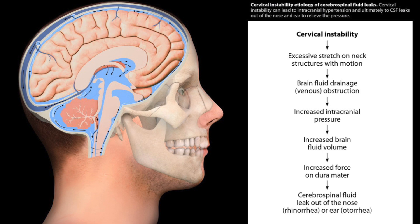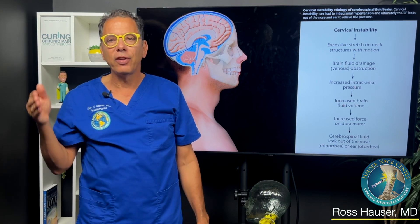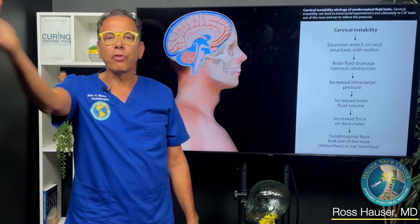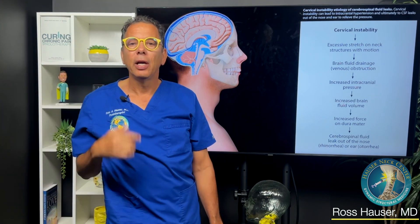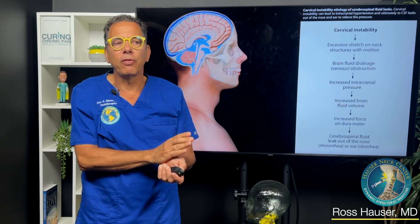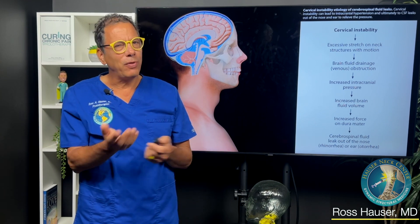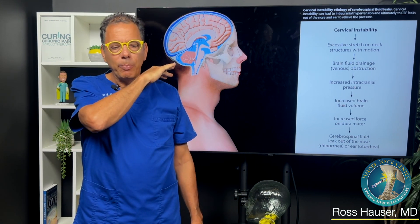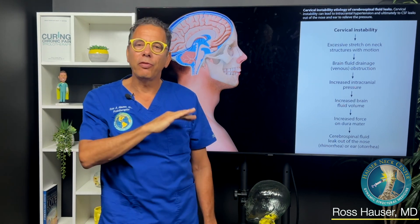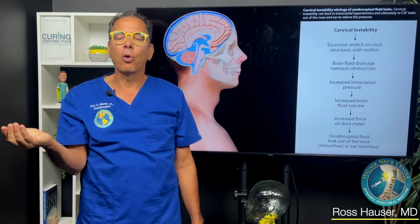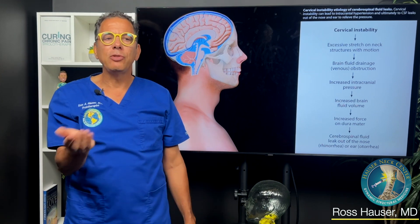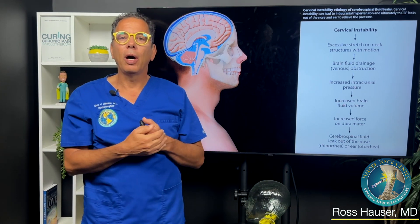The problem with documenting this is it's very hard — you have to inject contrast into the cerebral spinal fluid, which is a myelogram, and a myelogram can also cause the cerebral spinal fluid leak. So sometimes you just have to assume you have it. If somebody's symptoms are almost 100% resolved when they're laying down, but when they get up they have horrible head pressure, that could be a sign of cerebral spinal fluid leak, and sometimes you just have to assume you have it and do a blood patch.